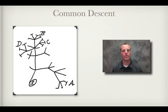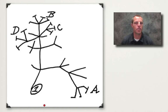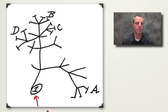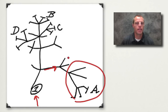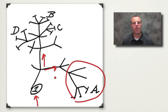What is common descent? If you look here on the left, you'll notice this is what we call a phylogenetic tree of life. This was actually drawn by Charles Darwin in his notebook as he was thinking about the idea that all organisms could have descended from a common ancestor. This point where the little number one is would represent a common ancestor that all life on this planet has evolved from. We can trace all life back to this common ancestor through common descent.